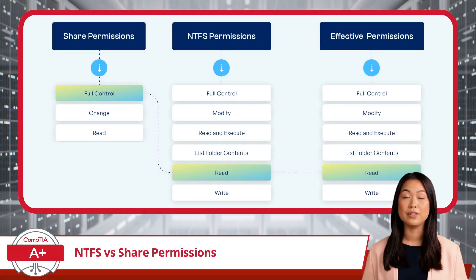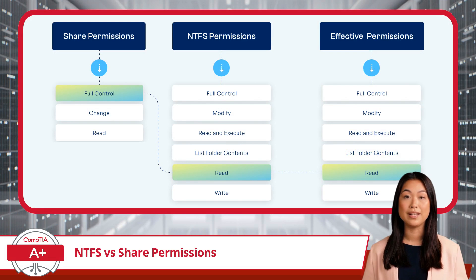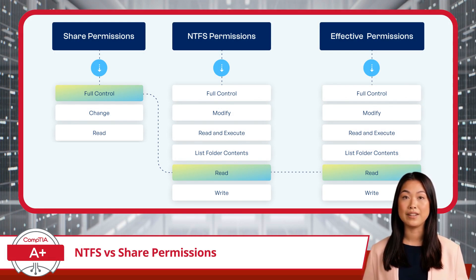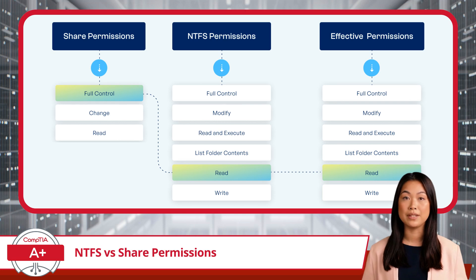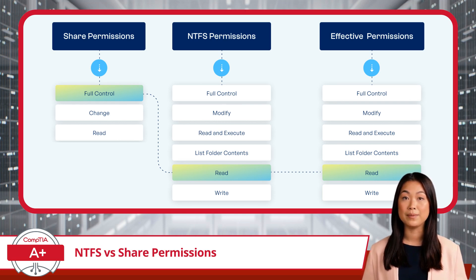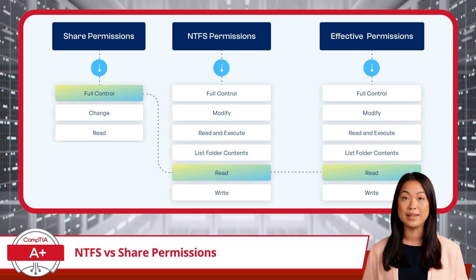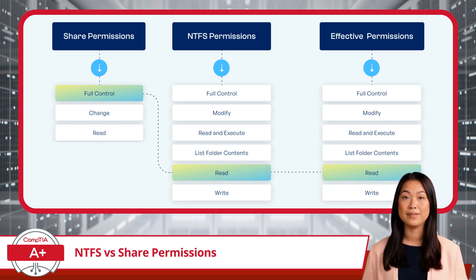It's important to remember that share permissions apply only when accessing resources over the network. If files or folders are accessed locally, only NTFS permissions come into play. When both NTFS and share permissions are in place, the most restrictive permission between them will apply. For example, if a user is accessing a file remotely and has full control through share permissions but only read access through NTFS permissions, they will only be able to read the file.